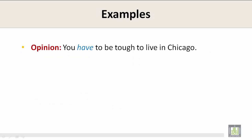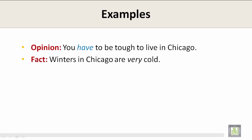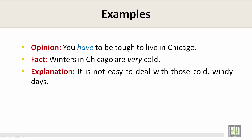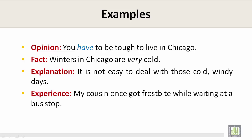Examples: An opinion is — you have to be tough to live in Chicago. A fact would be — winters in Chicago are very cold. An explanation would be — it is not easy to deal with those cold, windy days. And an experience would be — my cousin once got frostbite while waiting at a bus stop.